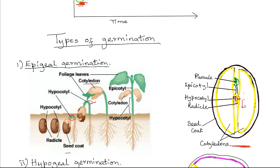Once out of the soil and exposed to light, the hypocotyl straightens out and the cotyledons begin to separate, exposing the plumule. The cotyledons develop chlorophyll and become photosynthetic. The plumule then grows into the first foliage leaves, which start photosynthesizing. The cotyledons then wither and fall off.